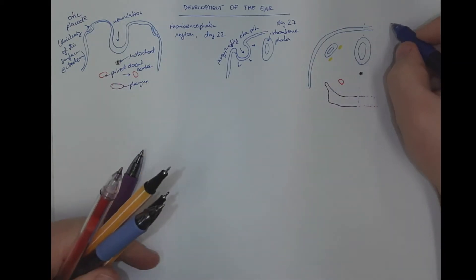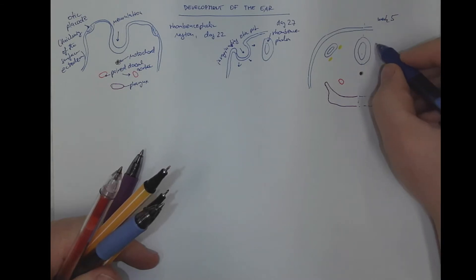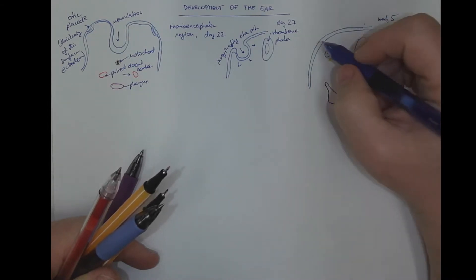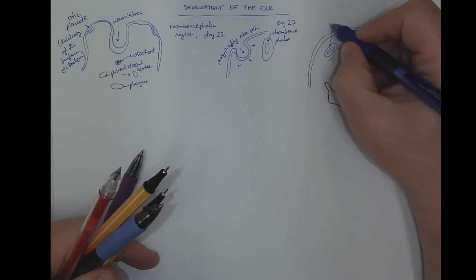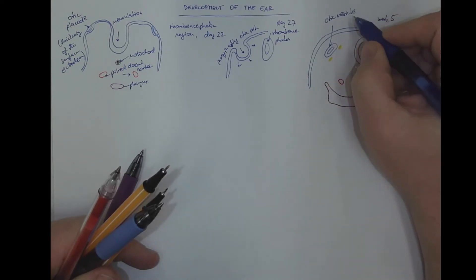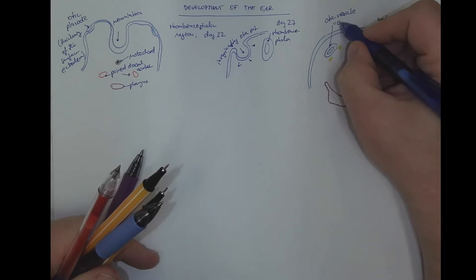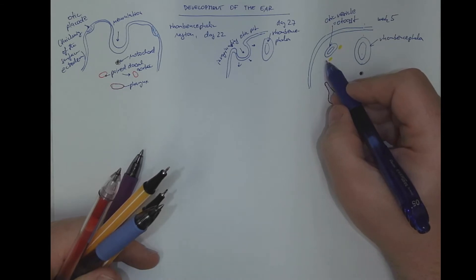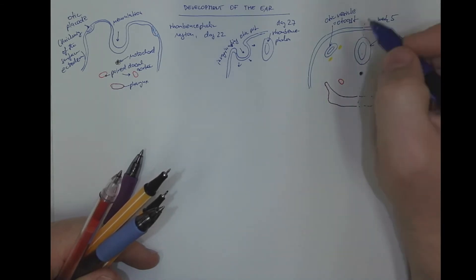So we got, this is the fifth week. This is the rhombencephalon, this is the fully invaginated otic vesicle, also known as the otocyst, and that will become the inner ear, the membranous labyrinth of the inner ear.